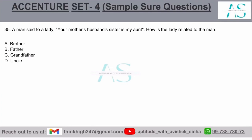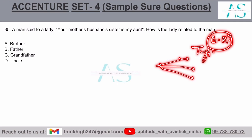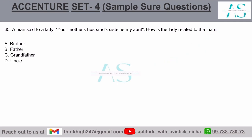A man said to a lady, your mother's husband's sister is my aunt. How is the lady related to the man? A typical question from blood relation, wherein this is type 1 where it deals with pointing to a photograph, pointing to a painting, pointing to a person. Someone said just this and this, and that is how you solve these type of questions.